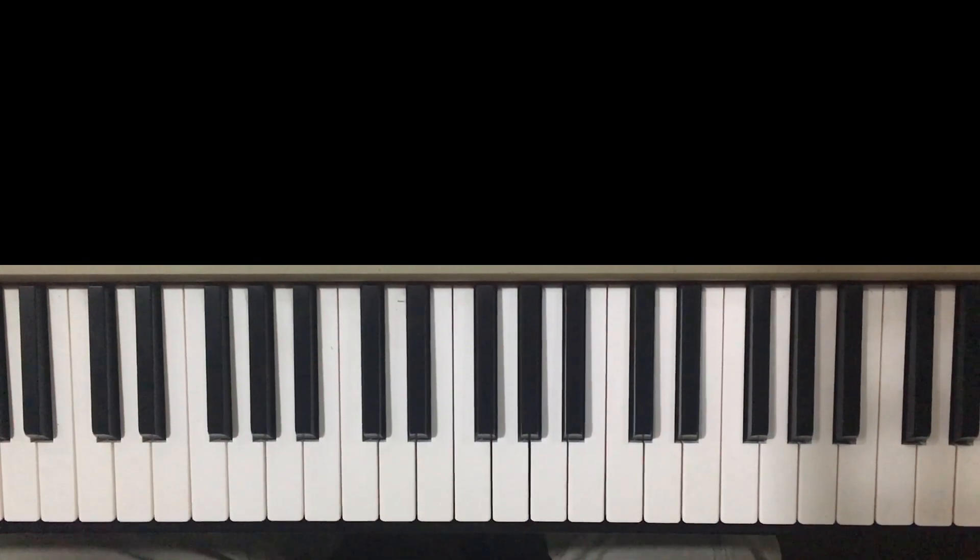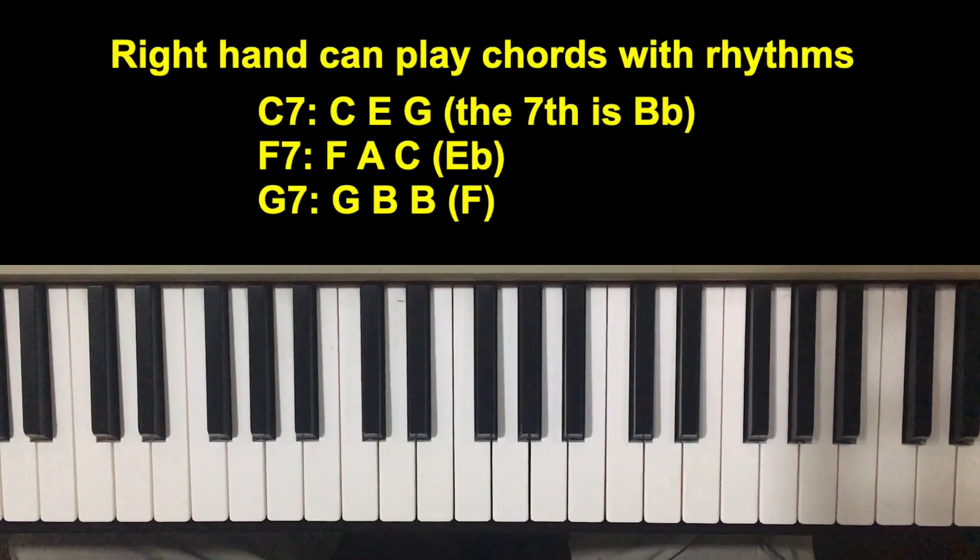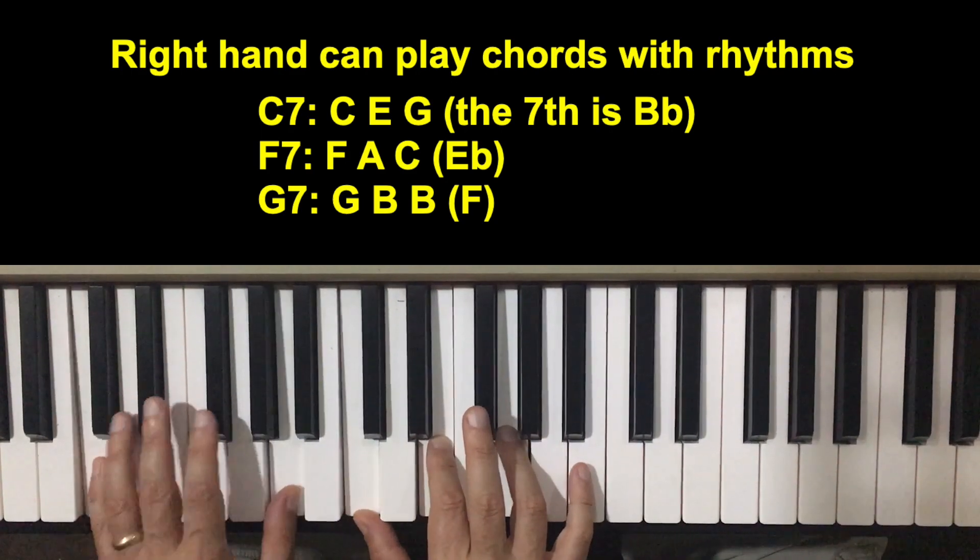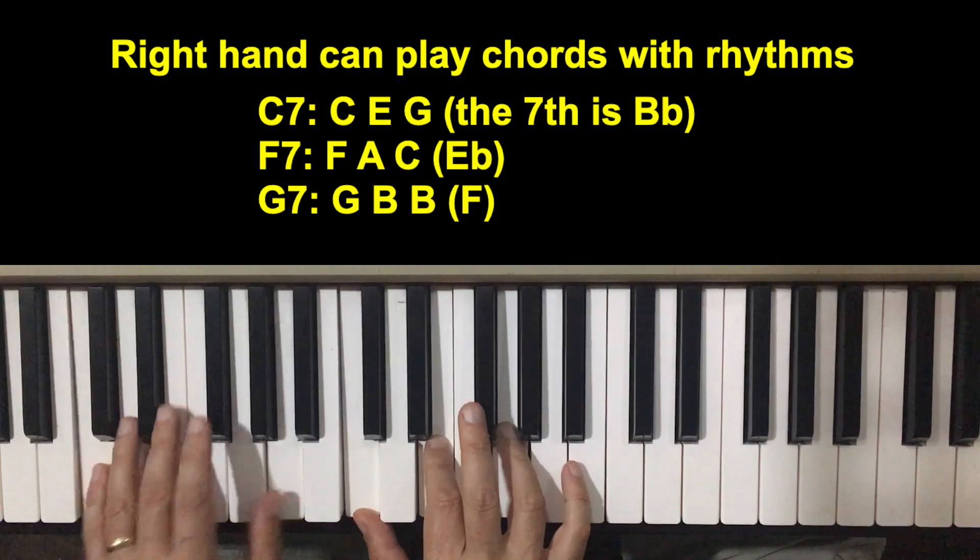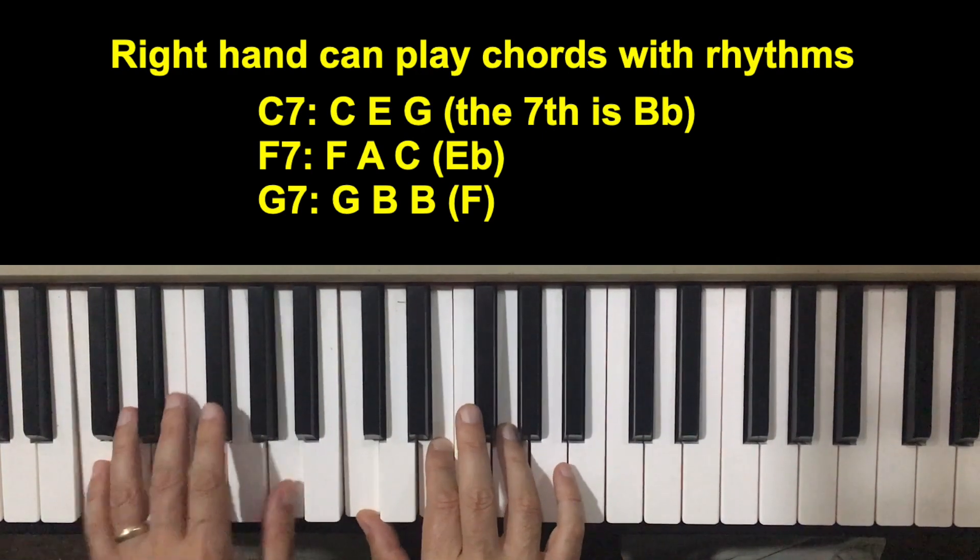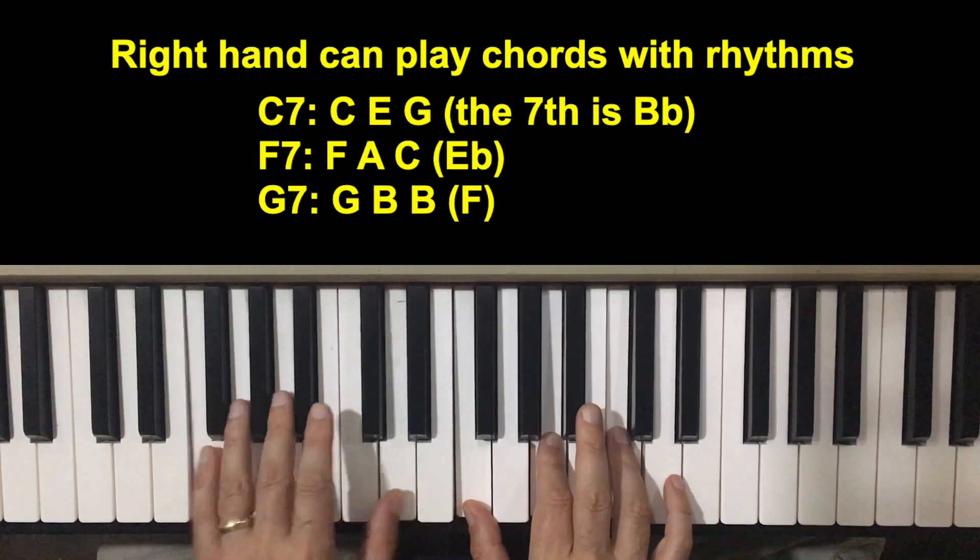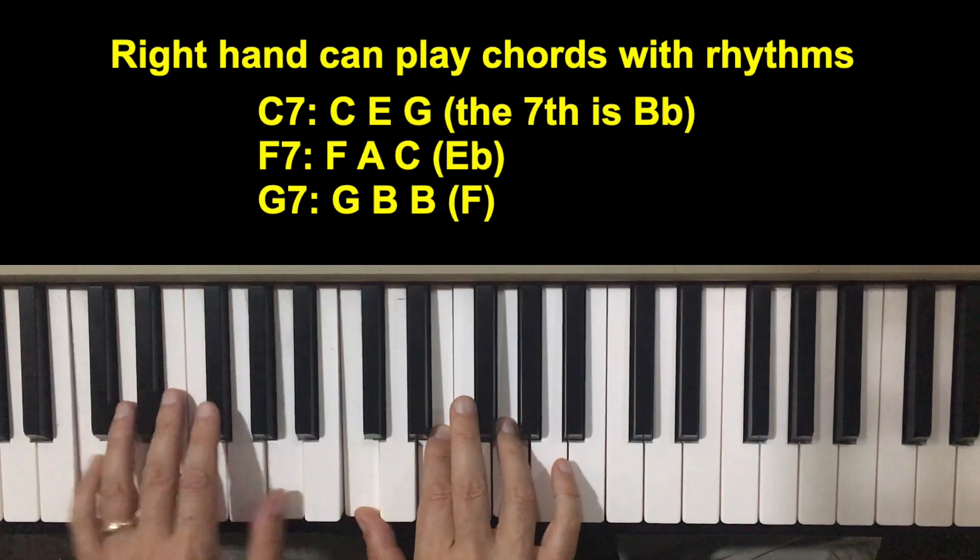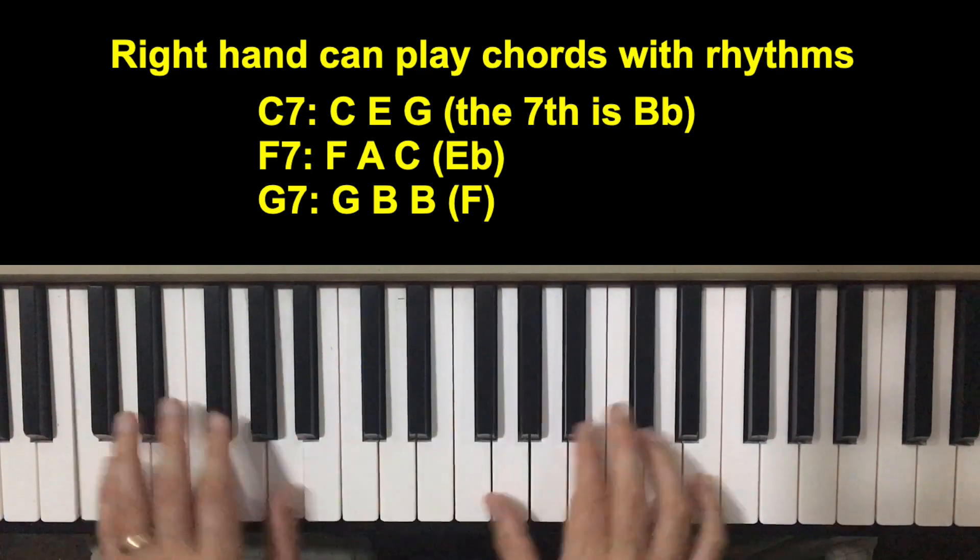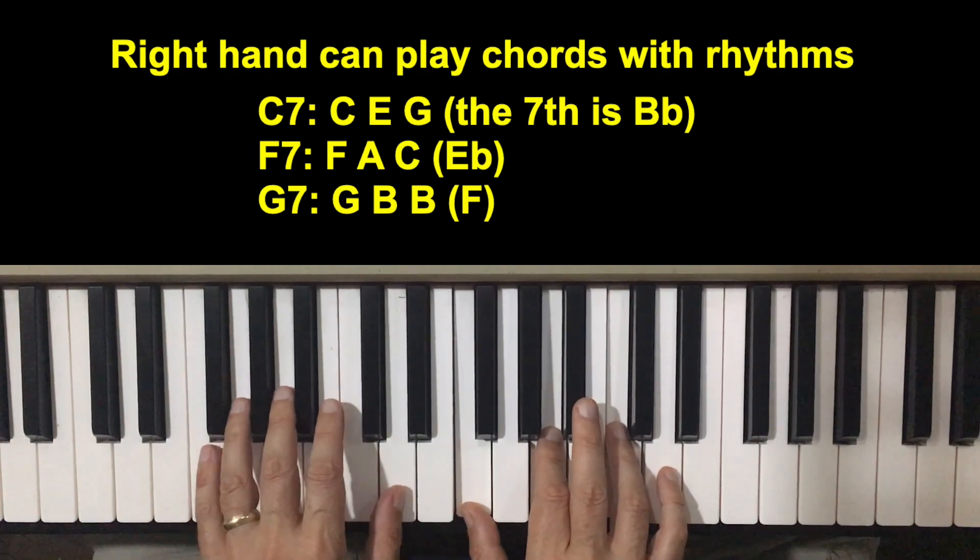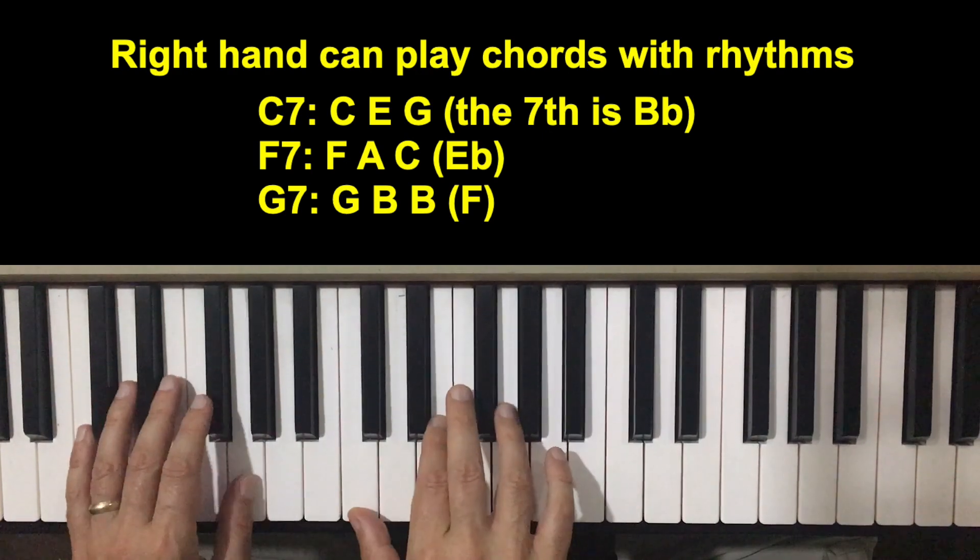Now there are several things you can do with the right hand. Once you've mastered that and the form is easy, you can play simple chords for each one. C-E-G is a C chord, so you can play. And when you get to the F chord, everything moves. F-A-C. Back to the C chord. The G is G-B-D. And you can go to an F chord if you want to. There's some variations possible. Back to the C.